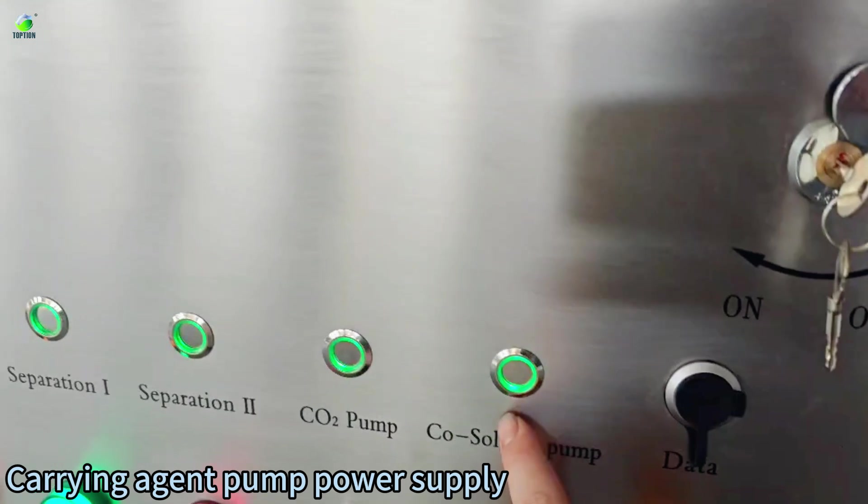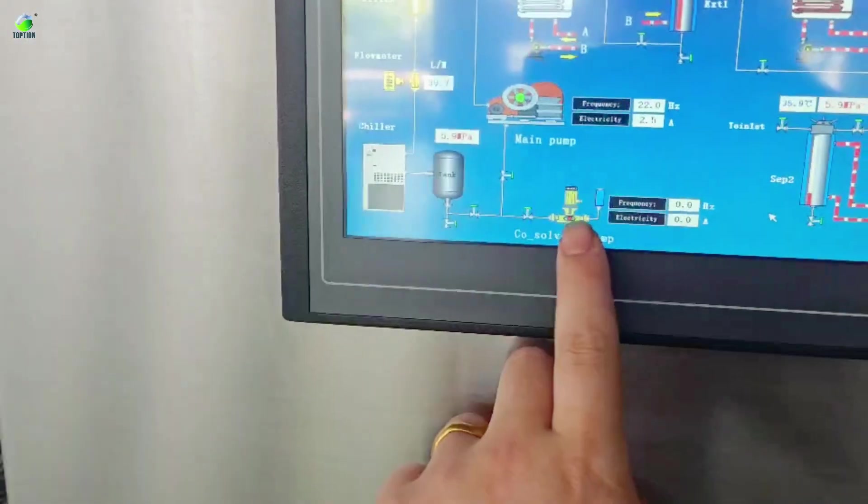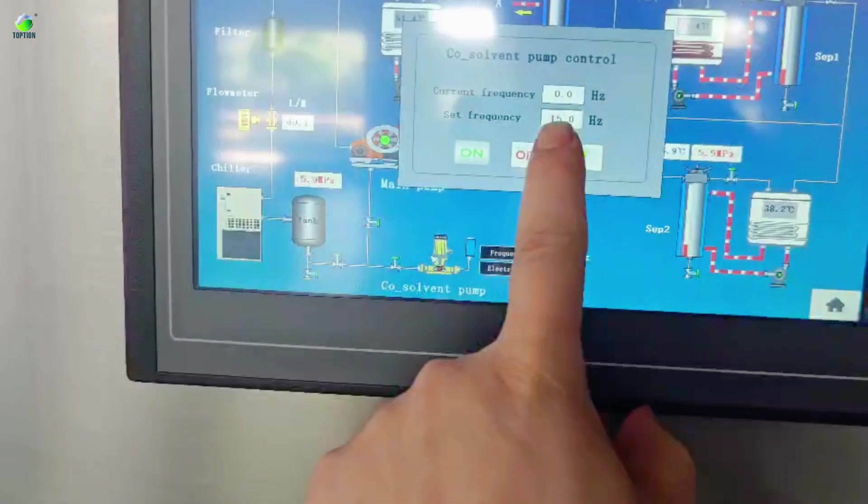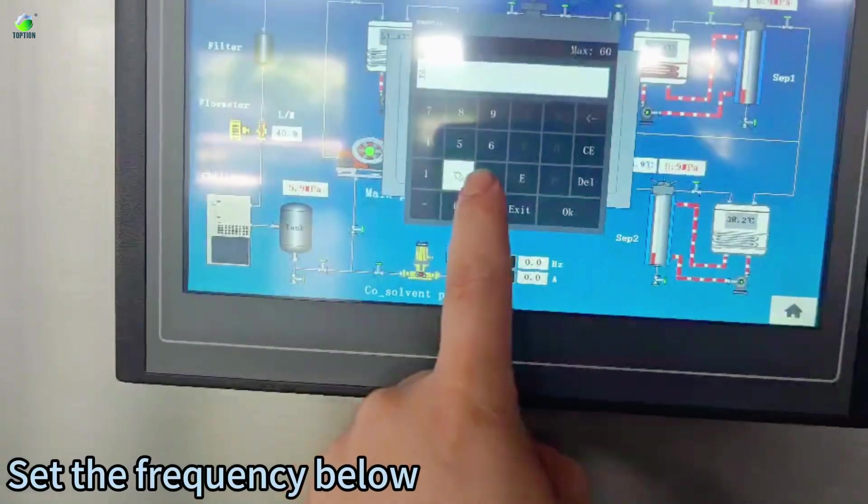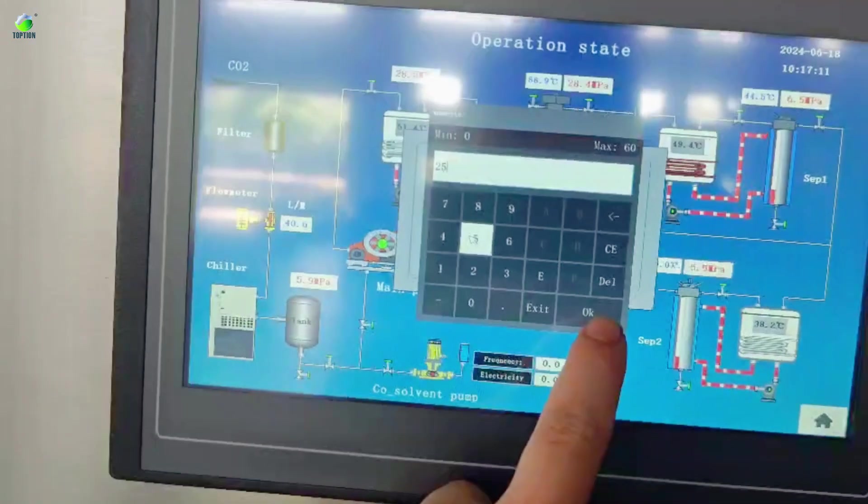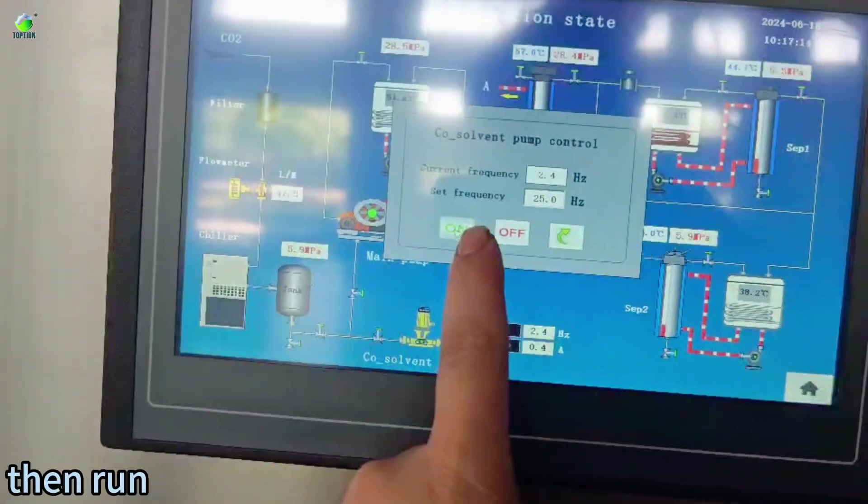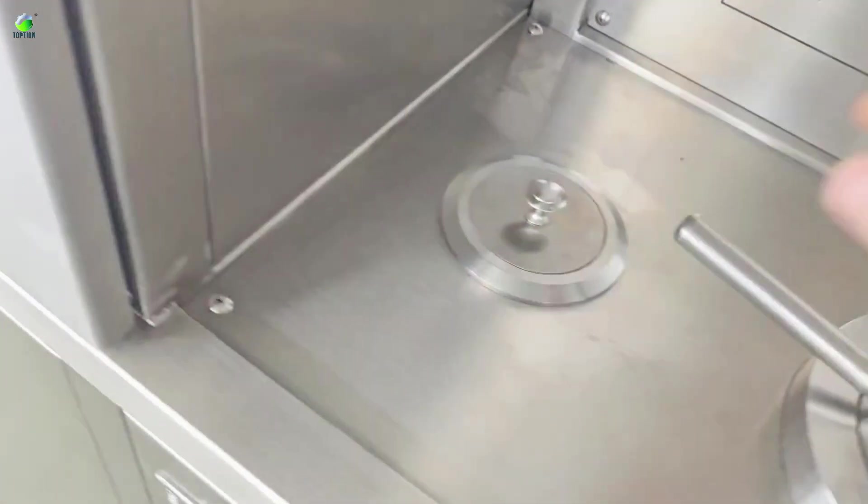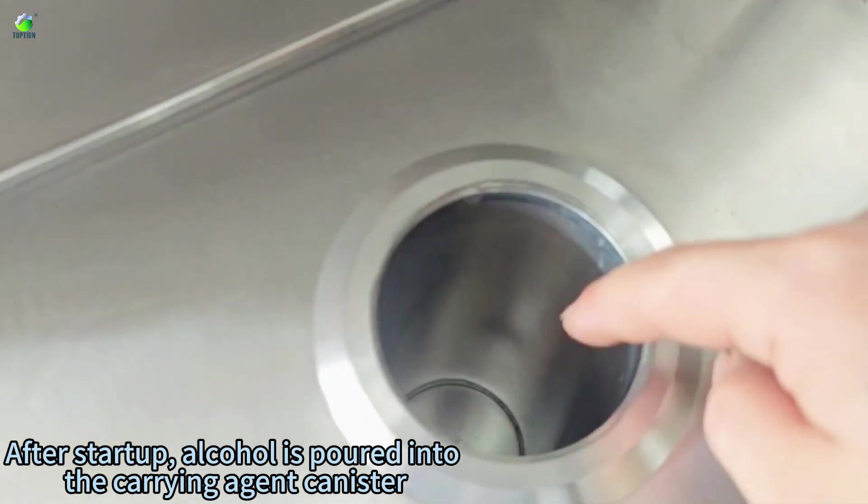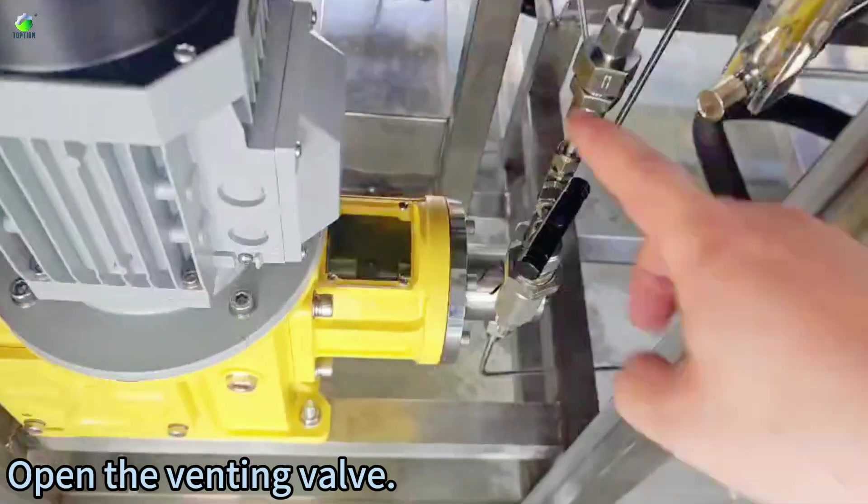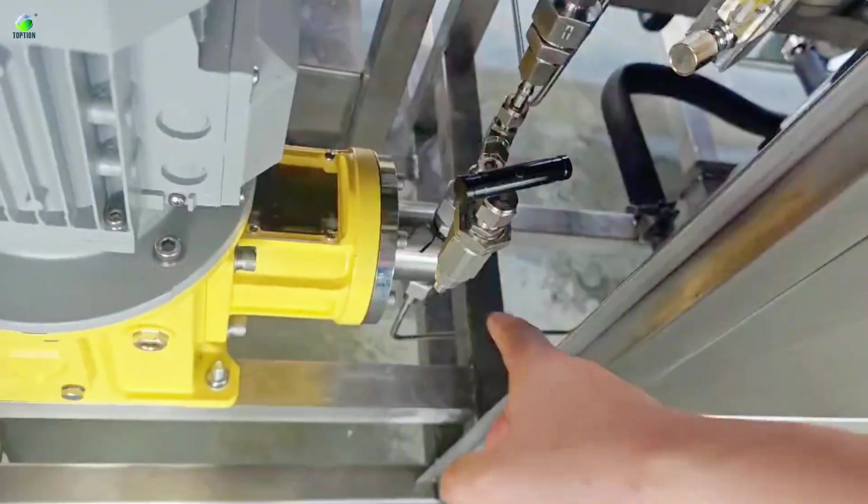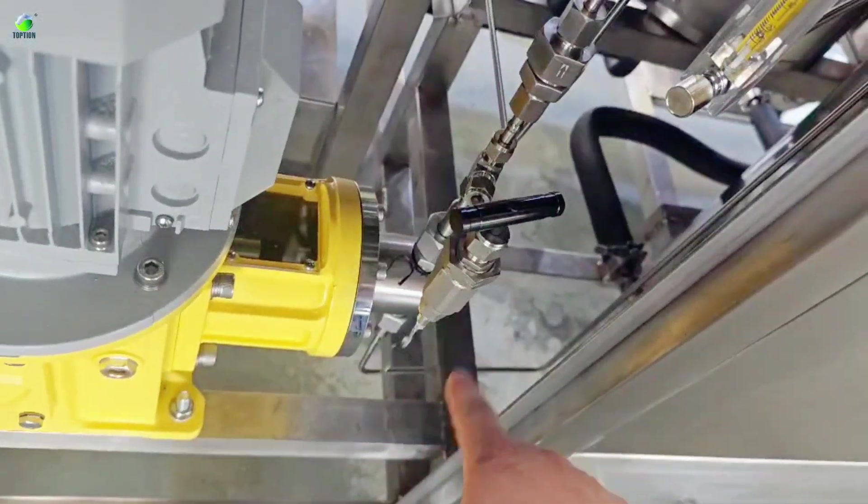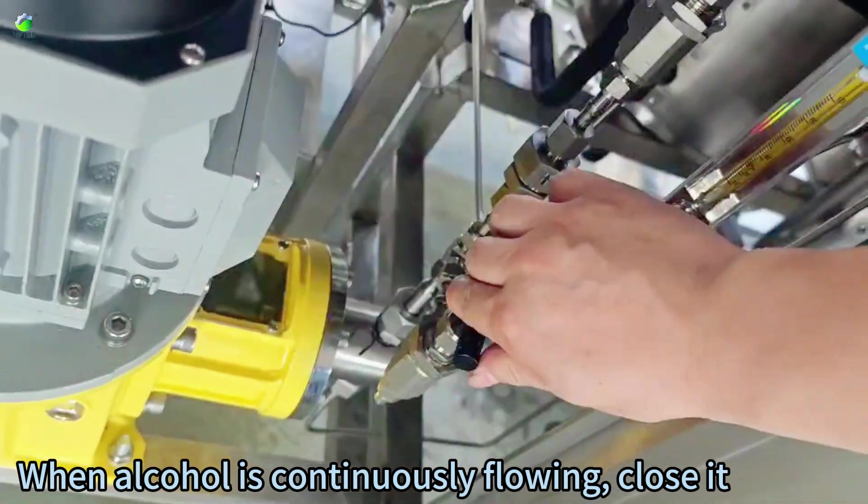Carrying agent pump power supply. Set the frequency below. Then run. After startup, alcohol is poured into the carrying agent canister. Open the venting valve. When alcohol is continuously flowing, close it.